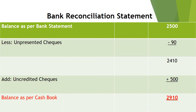So the balance as per the cashbook is $2,910. When reconciling from bank statement to cashbook: un-presented checks are deducted, and uncredited deposits are added, because those deposits were recorded in the cashbook but not yet shown in the bank statement.